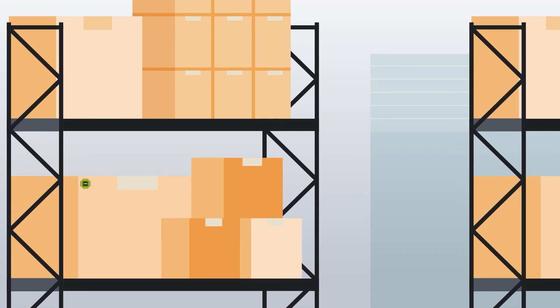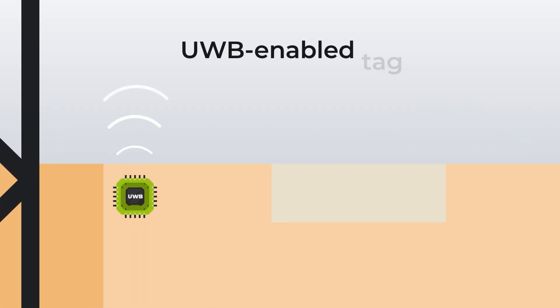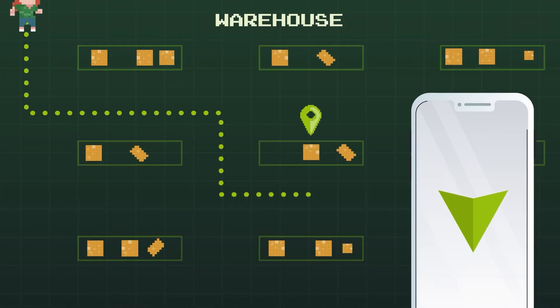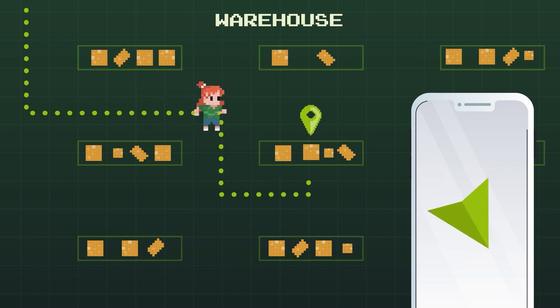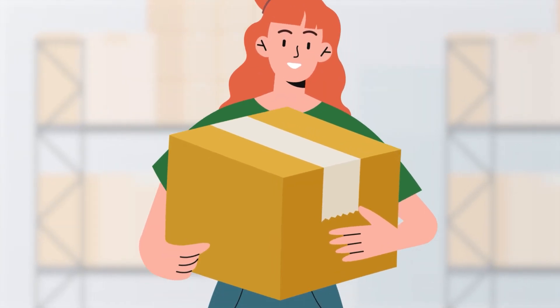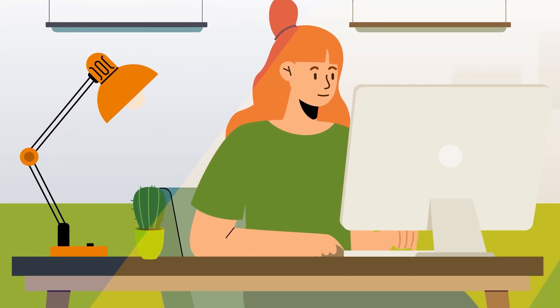In the warehouse, each package integrates an Ultra Wideband enabled tag, so Jane simply takes out her phone, selects the package she's looking for, and starts following the instructions on her screen to locate it. Jane finds the package she needs in no time, and she can finally go back to her office to conclude her workday.